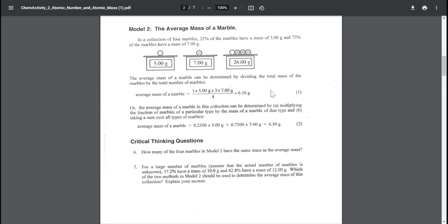There are two ways to calculate that. I can take 1 times 5, because I got one of those, and 3 times 7, because I got 3 of those, and divide it by the total, which is 4. I get an average of 6.5 grams.